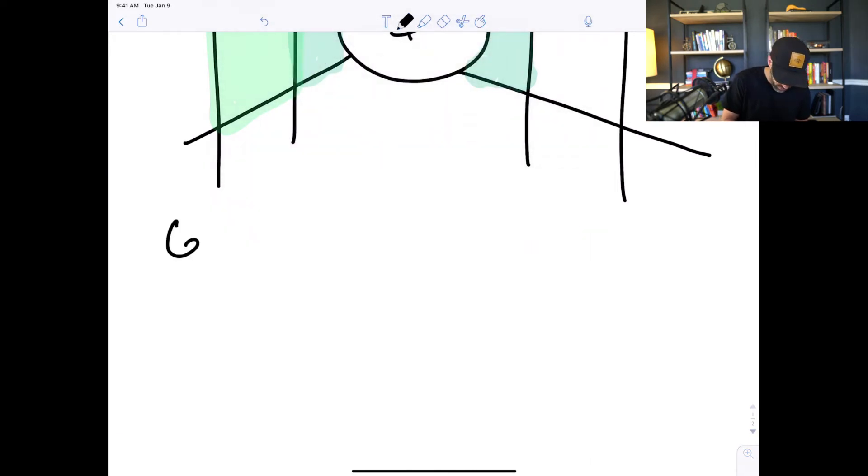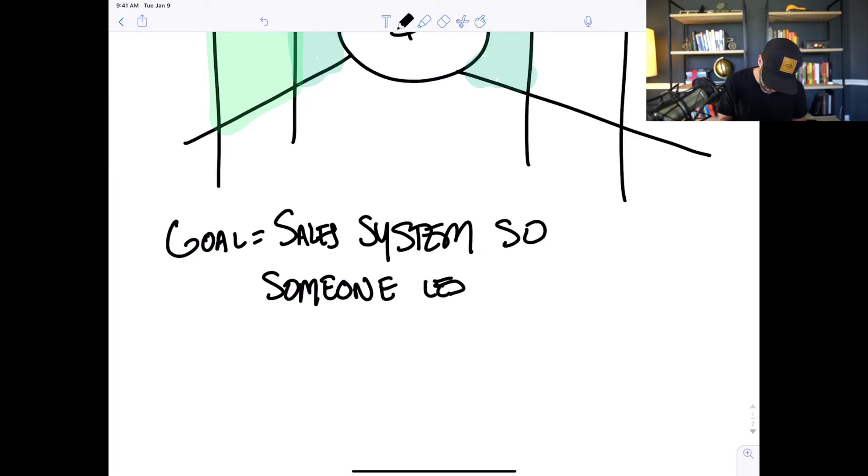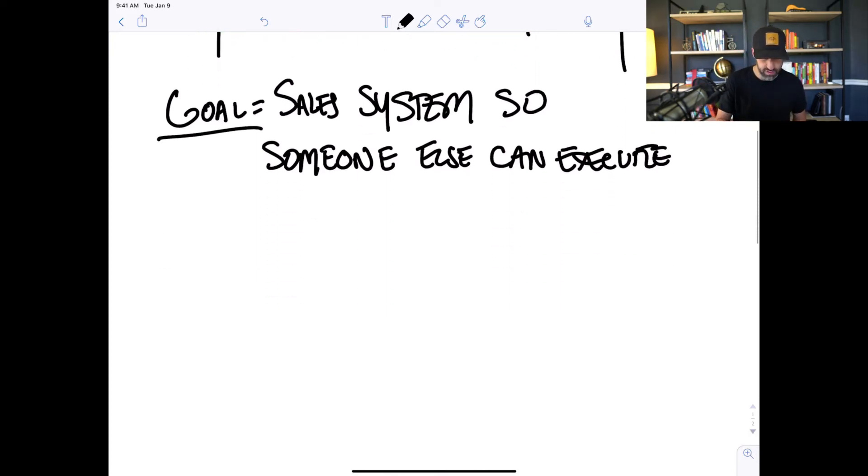Because like most service-based businesses, when you add a new client, sales and marketing stop. And then when you finish that client project, you go back to sales and marketing. It's like starting all over again, it's like starting up the Titanic from a standstill. Whereas if you have a marketing and sales system that's moving leads to the sales experience and helping you convert them while you're in fulfillment, you're actually not going to lose that sales and marketing momentum.